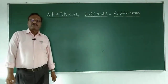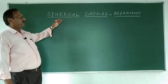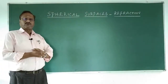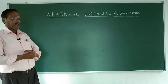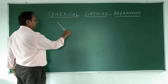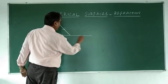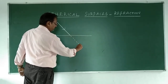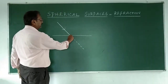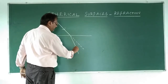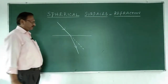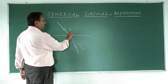Hello students, today we are going to learn about refraction through spherical surfaces. First of all, what do you mean by refraction? Refraction is the bending of light when it travels from one medium to another. The light should have been traveling in a straight line, which is rectilinear propagation of light, but it is bending.